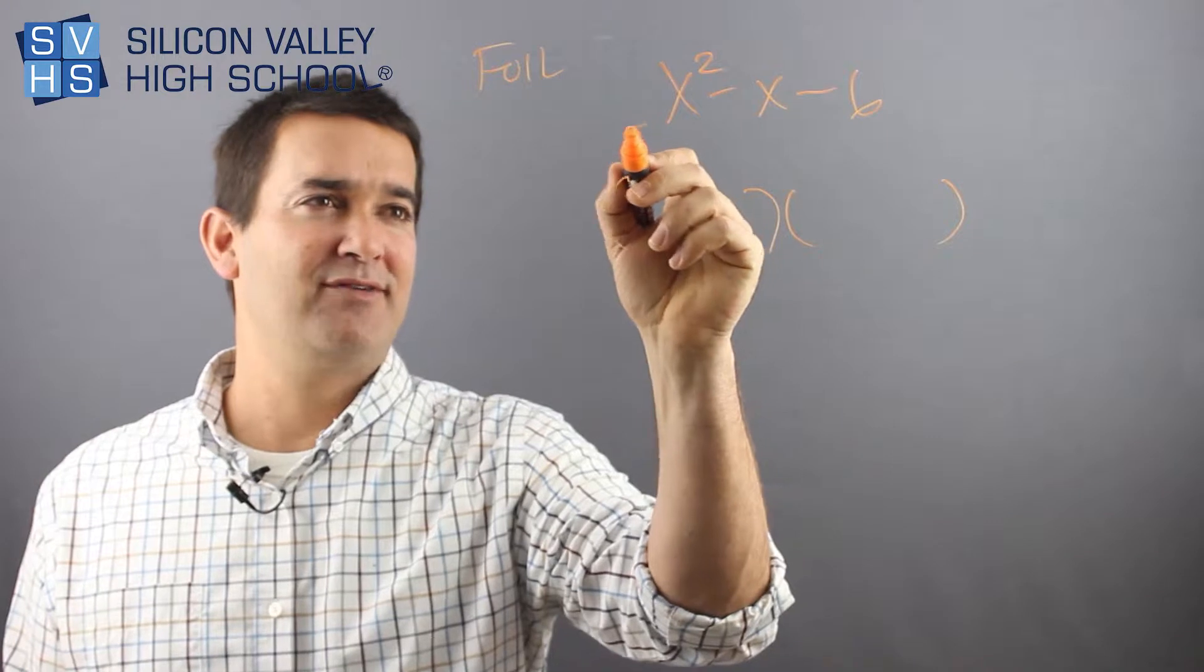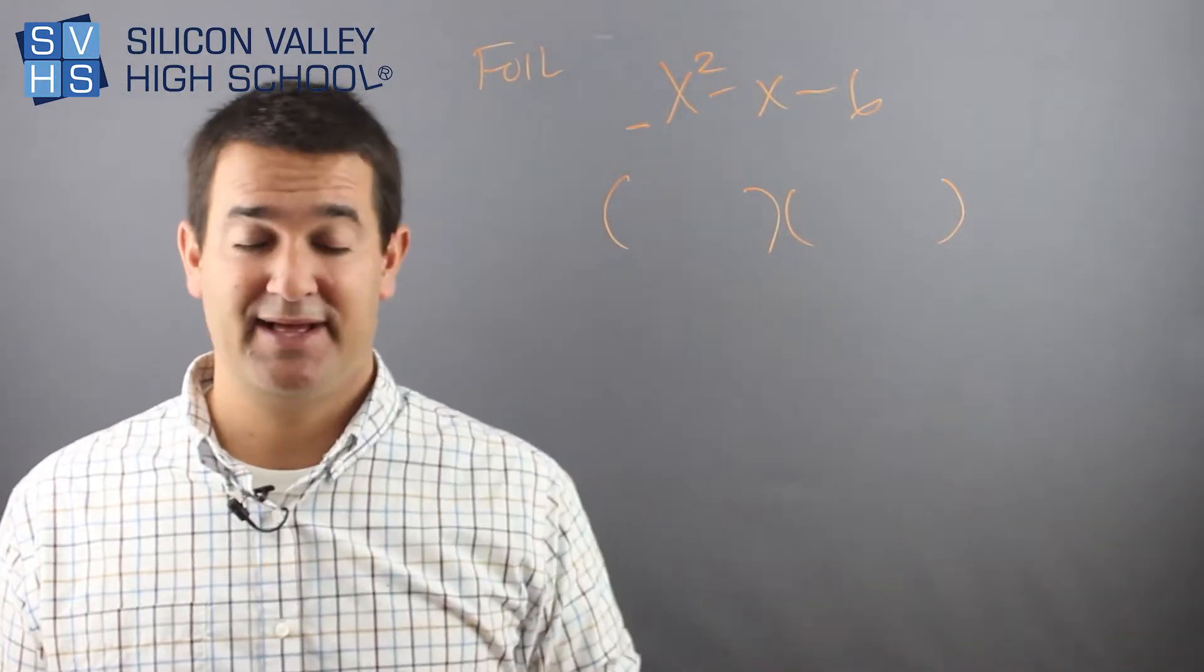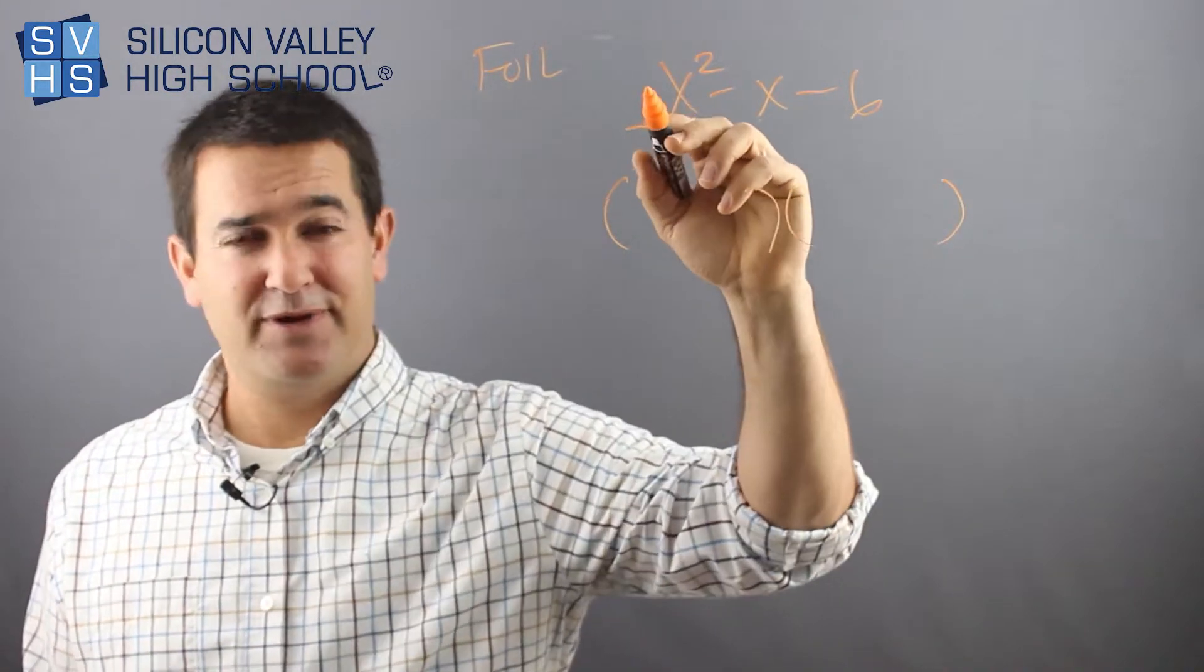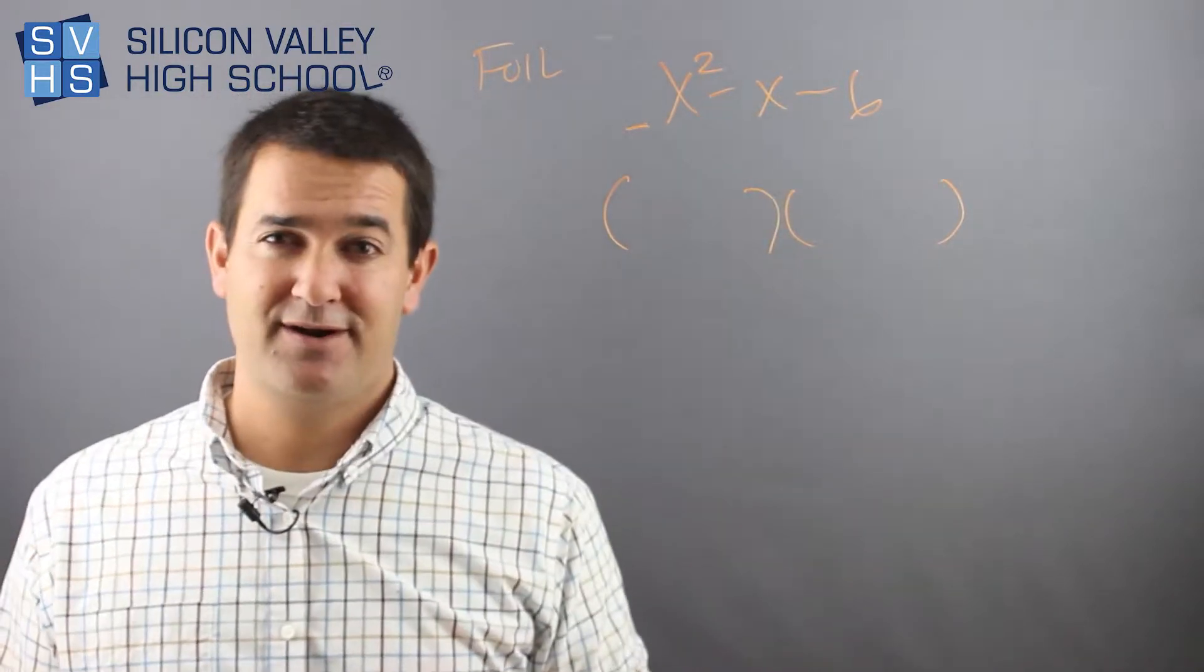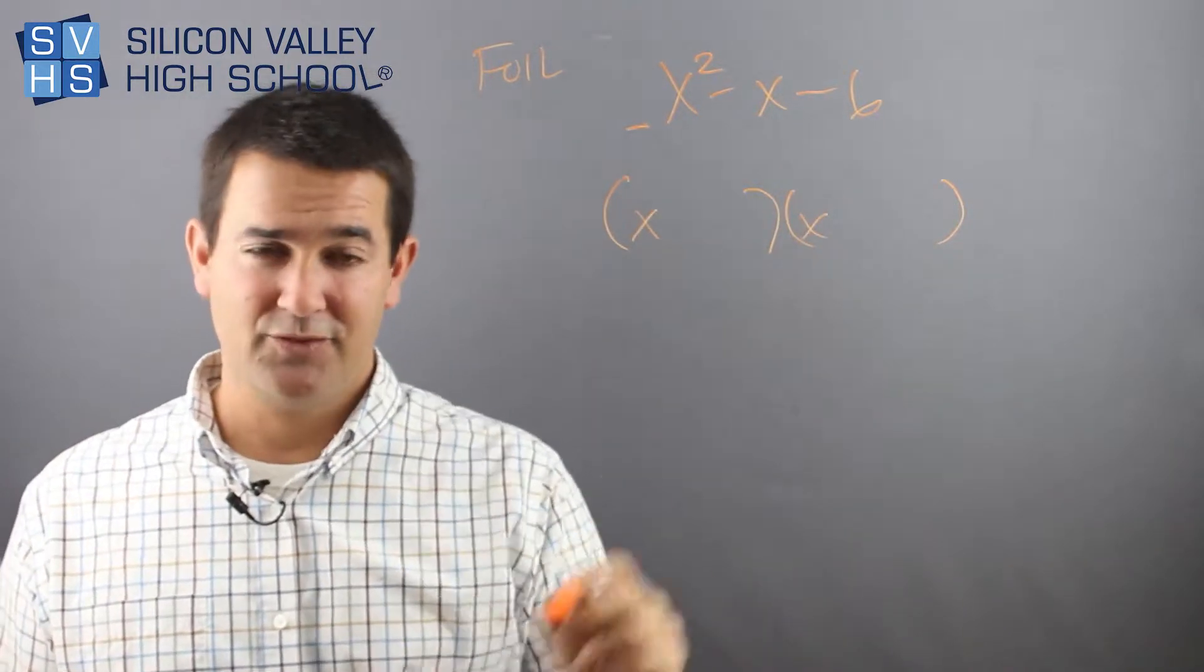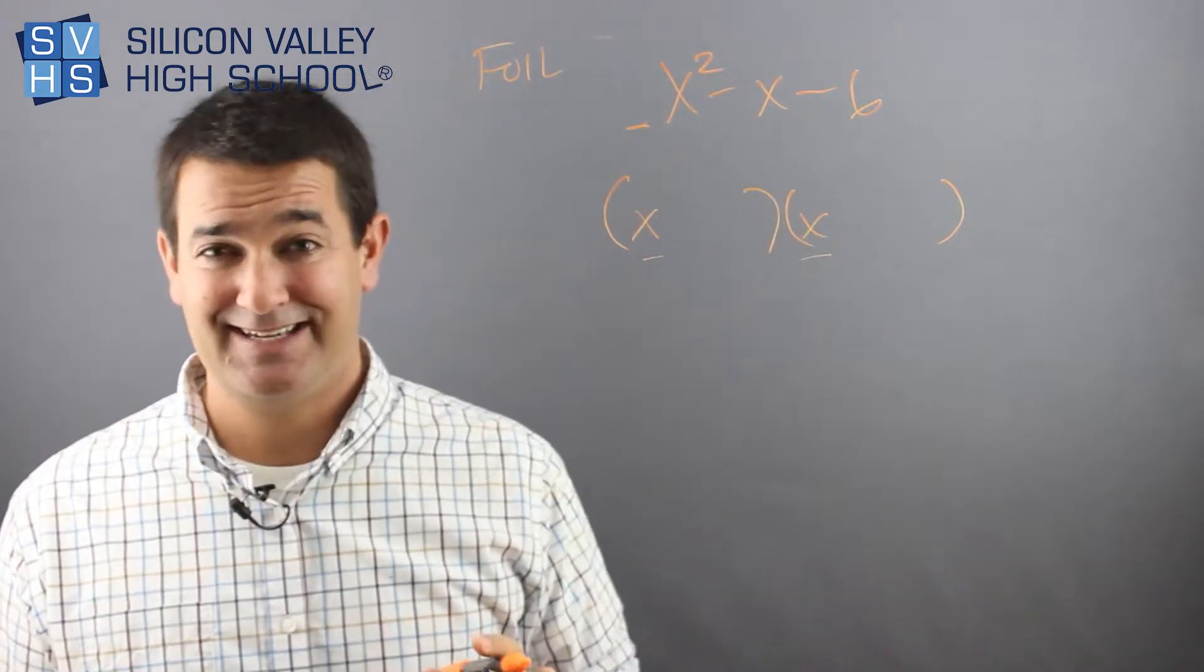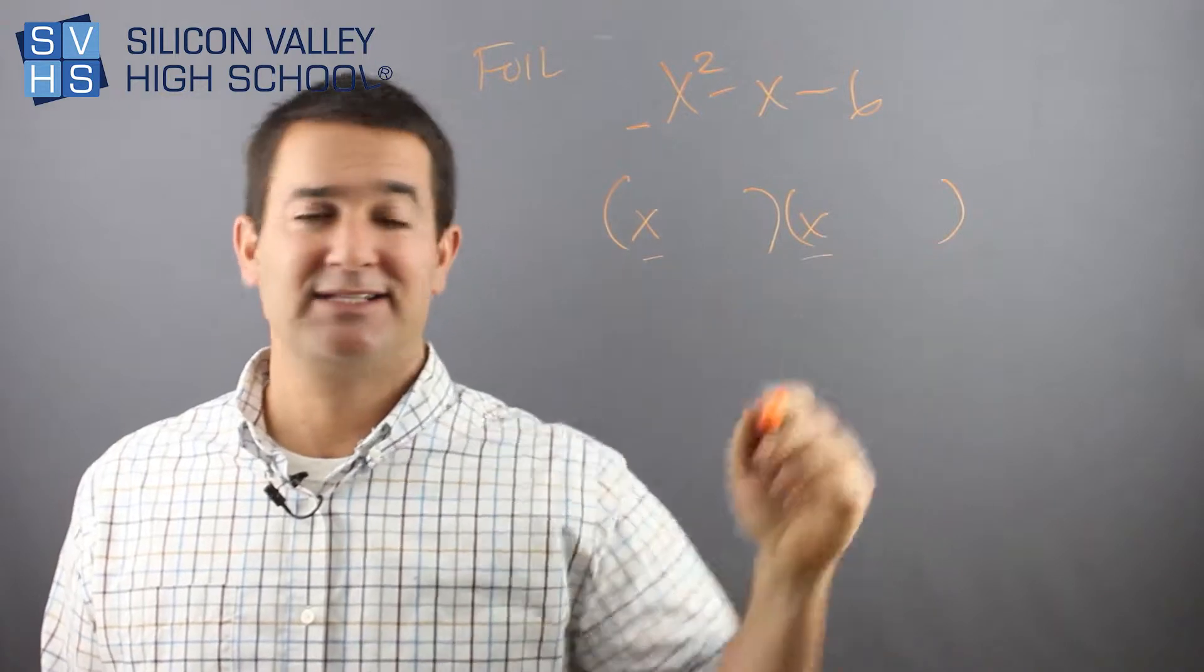Whenever you do not have a coefficient here you're super lucky. When you have a number here like 4 or 16 or 5 it gets exponentially harder. But when you do not have a coefficient, the reason this is easy is these two guys are always going to be x and x. The reason is these two have to multiply to be x². So that's easy. You can just put it there before you even think - write your parentheses, put your x's before you think.